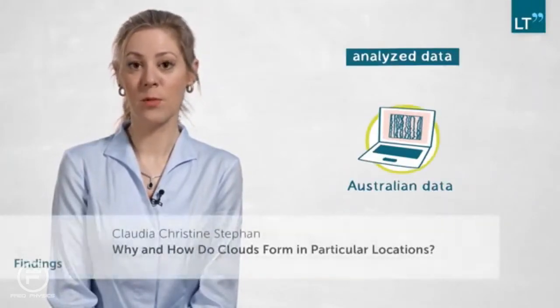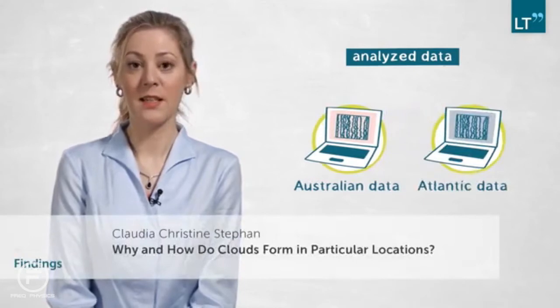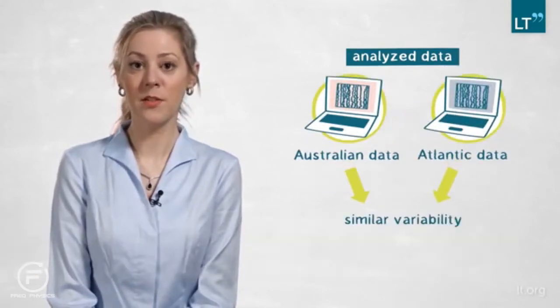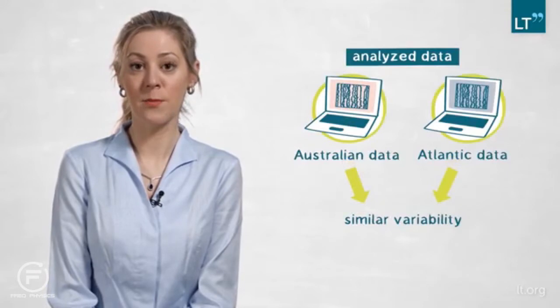So the first question we asked was whether similar variability is found at Darwin, as was reported over the Atlantic. And the answer to that is yes, we find very similar variability in the dataset that we analyzed.